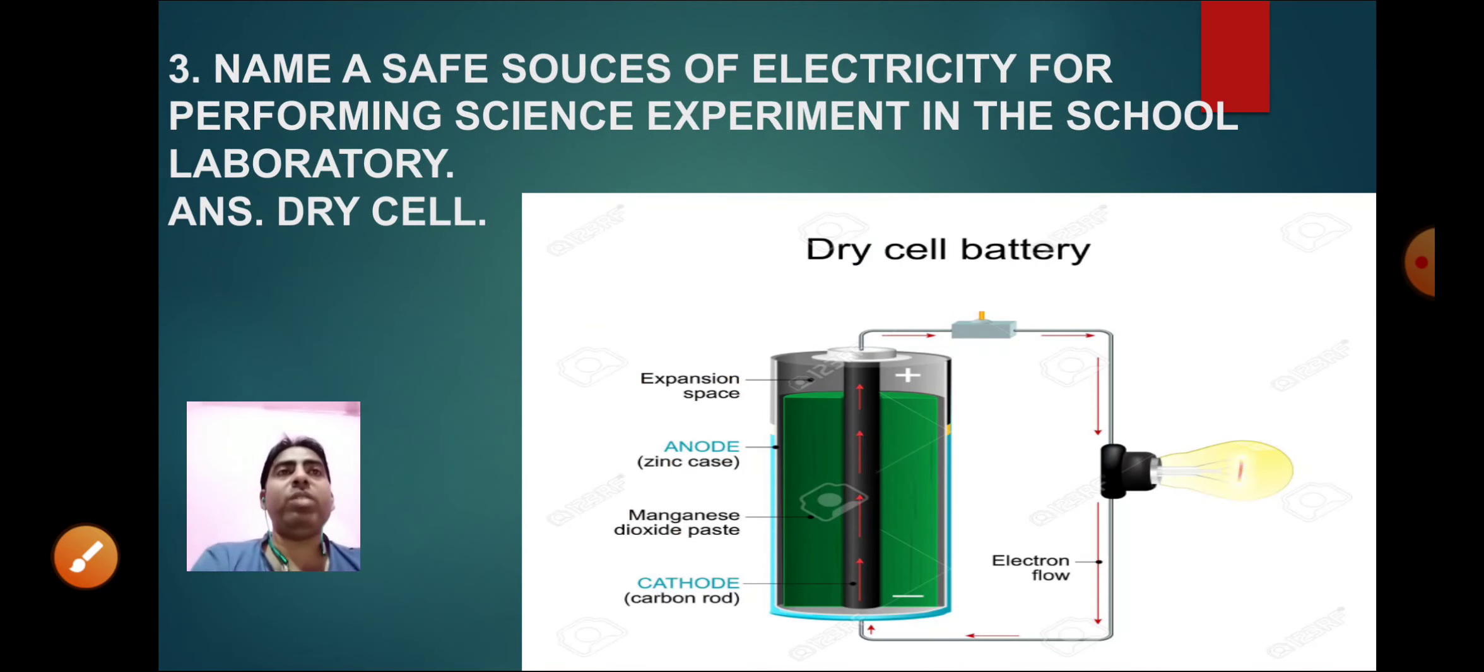Now moving to the third question: Name a safe source of electricity for performing science experiments in the school laboratory. The safe source is dry cell. We can use it because the current which flows has a constant voltage. It does not give fluctuation and high voltage, so we can do safe practicals from the dry cell.